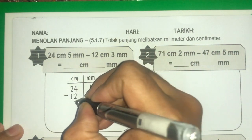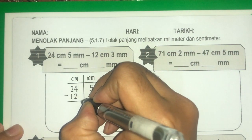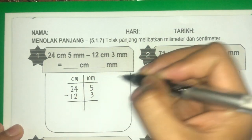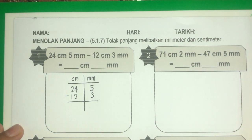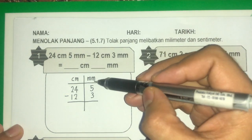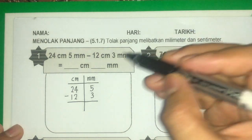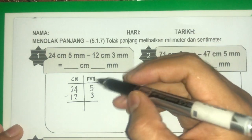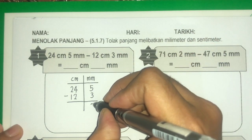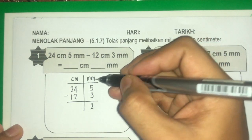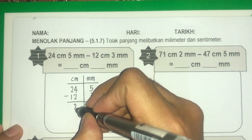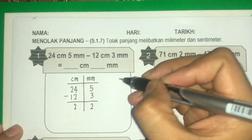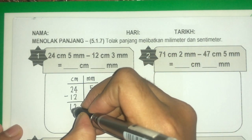Letak simbol tolak dan gariskan guna pembaris. Selepas itu kita tolak bermula daripada rumah mm dulu. 5 tolak 3, dapat 2. 4 tolak 2, dapat 2. 2 tolak 1, dapat 1.